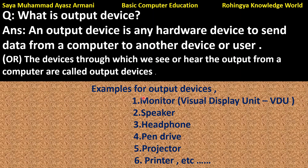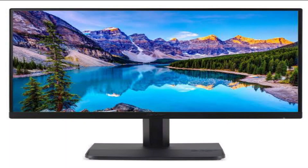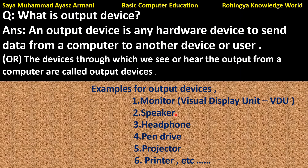Now let us look at examples of output devices. The first example is the monitor. The monitor is also called a Visual Display Unit, or VDU. On the computer, whatever is displayed on the screen is shown through the monitor, so the monitor is an output device.